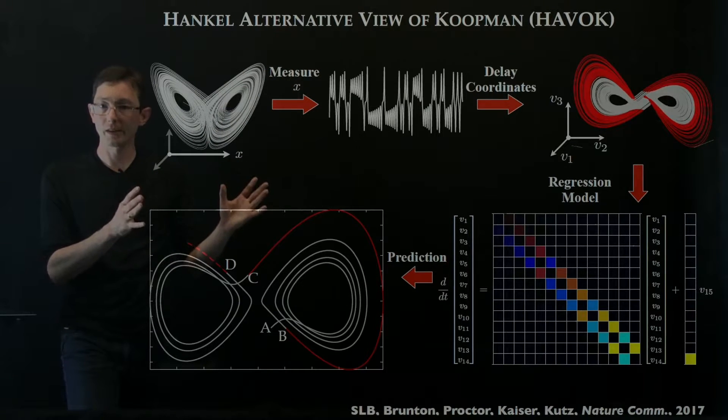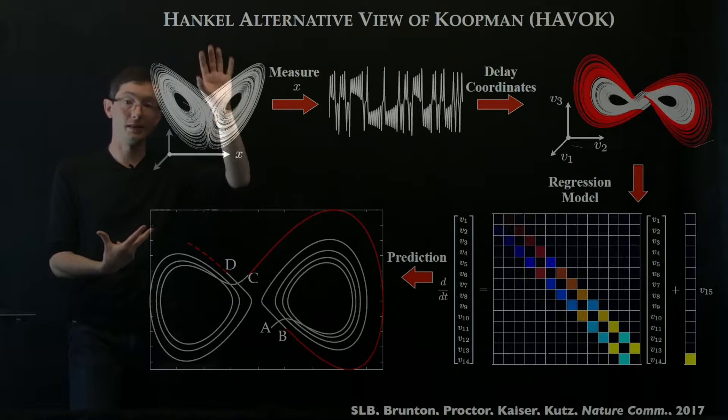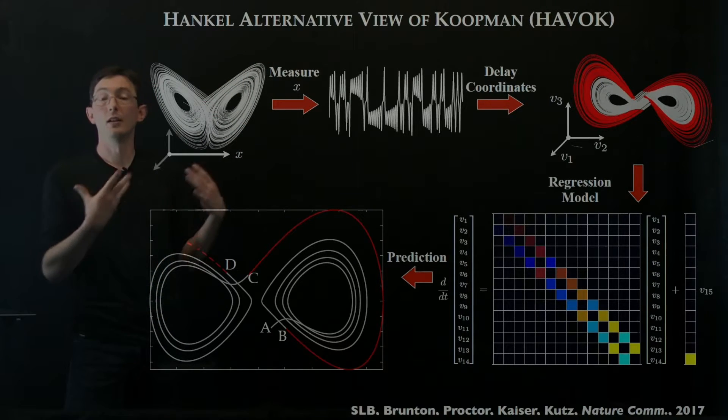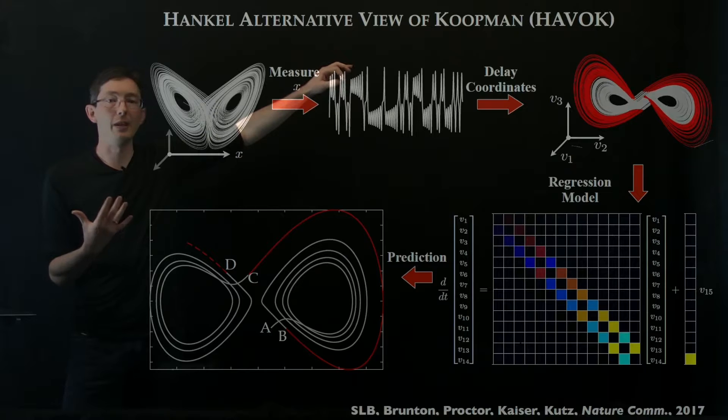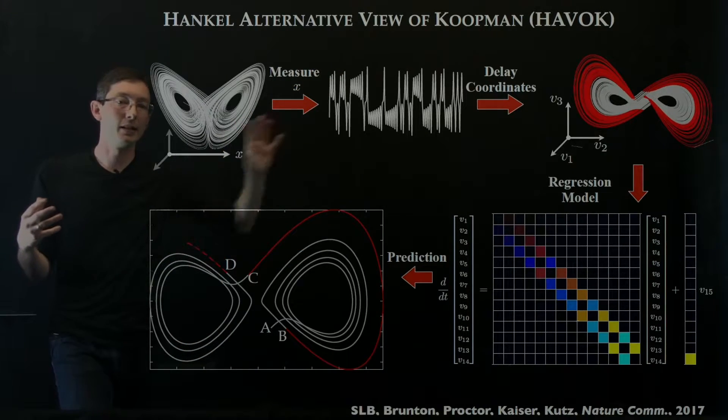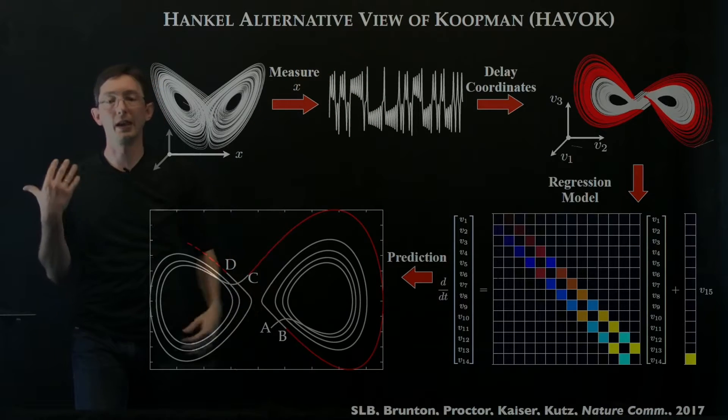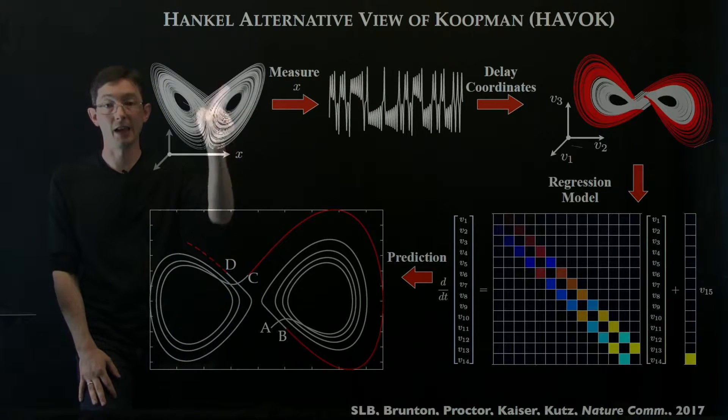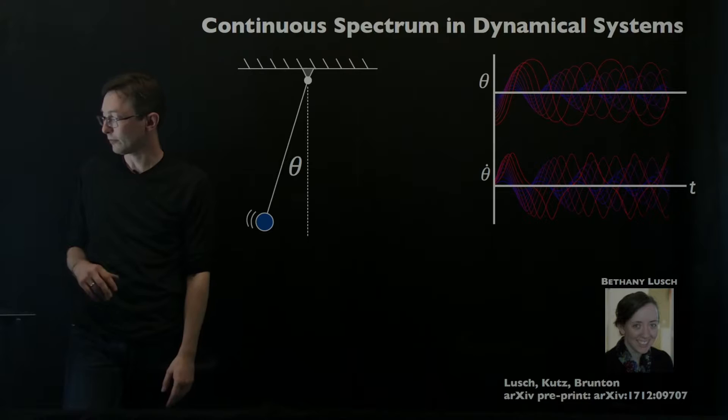We were really surprised and pleased that this kind of time delay coordinate system works so well for Koopman. We gave it this acronym HAVOK. It sounds kind of cool, but basically it's just time delay coordinates and then do DMD and you get good representations of these chaotic systems.